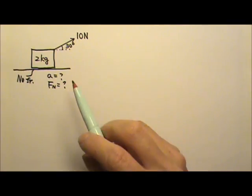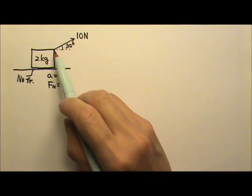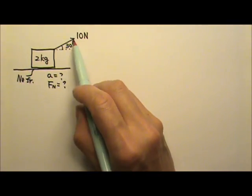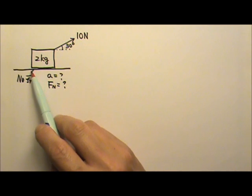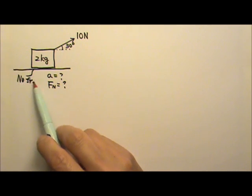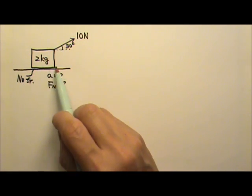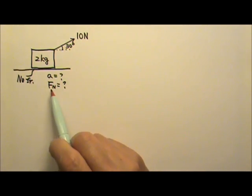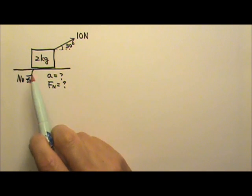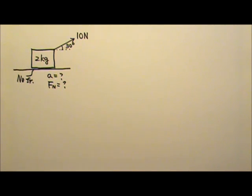So we'll start with the pulling force. We're going to ignore friction. We're looking for the acceleration of the box and the normal force acting on the box.